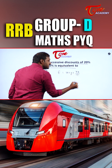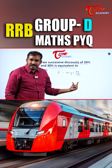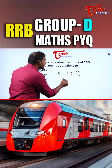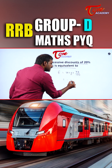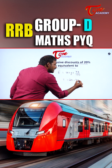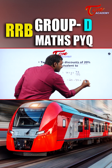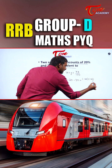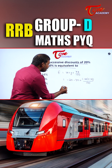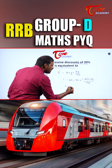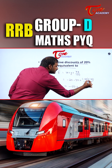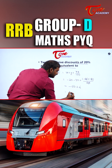Now here in this scenario, both are discounts, so that means minus and minus. So what you will get here? Minus 20 minus 30 plus minus 20 into minus 30 by 100. So what happens to this now? Minus 50 plus 6, which in turn gives us minus 44.